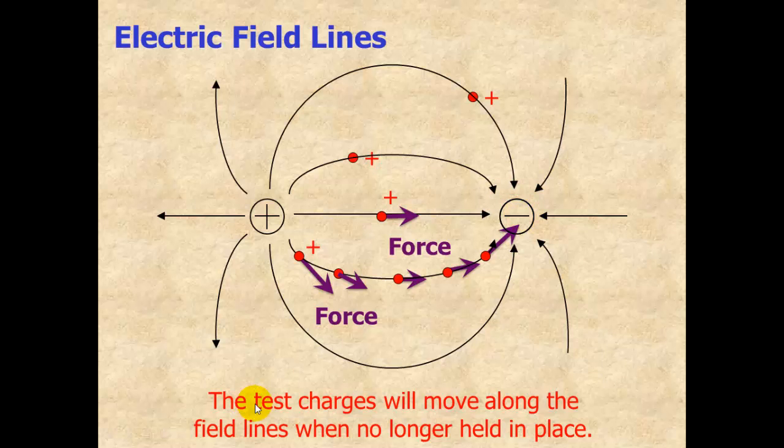The key point here is the test charges will move along the field lines when they're no longer held in place. If we were holding on to this positive test charge, restricting it from moving, if we finally let go of it, it's going to follow this path, away from the positive and toward the negative. It's going to follow the field line.